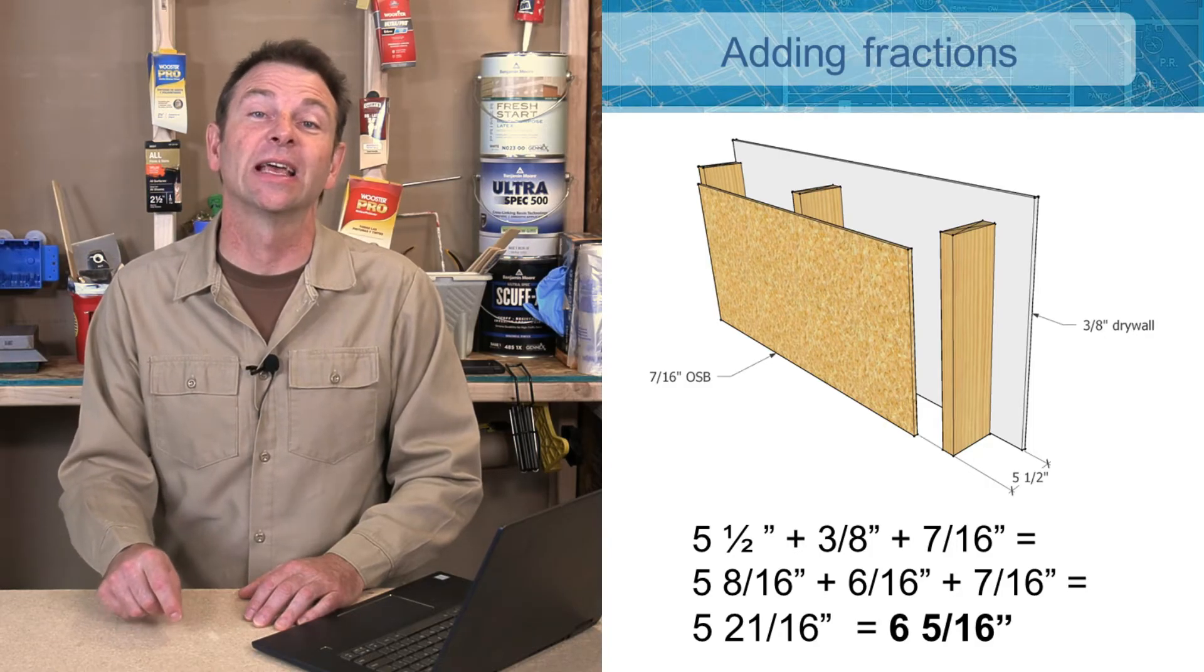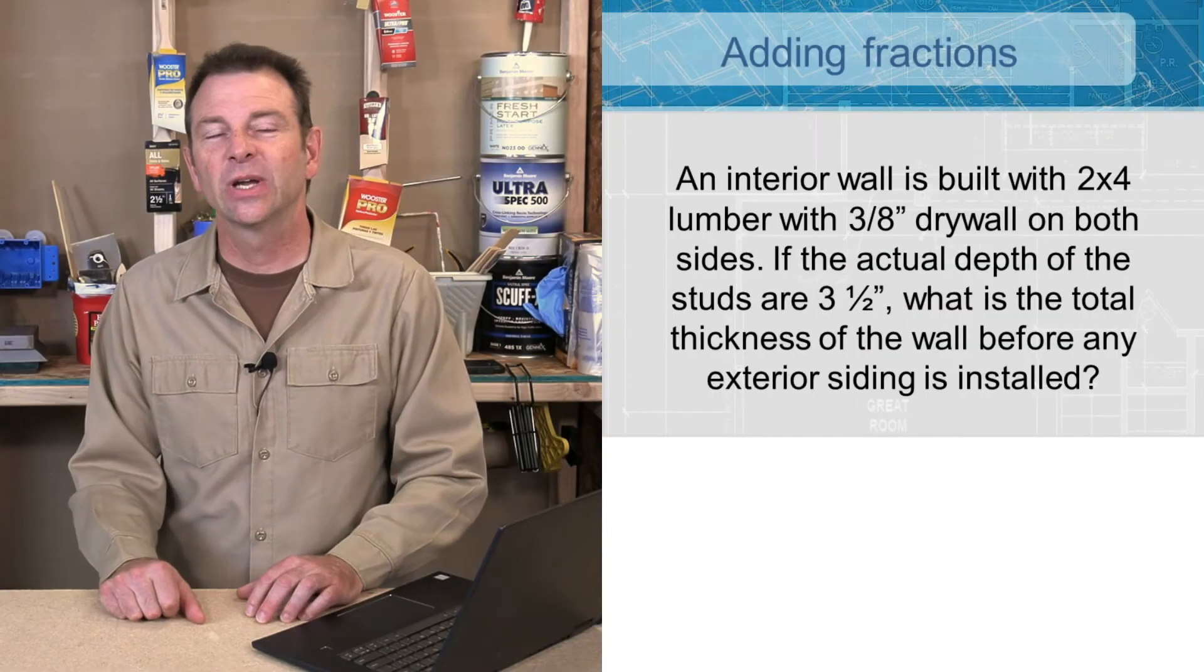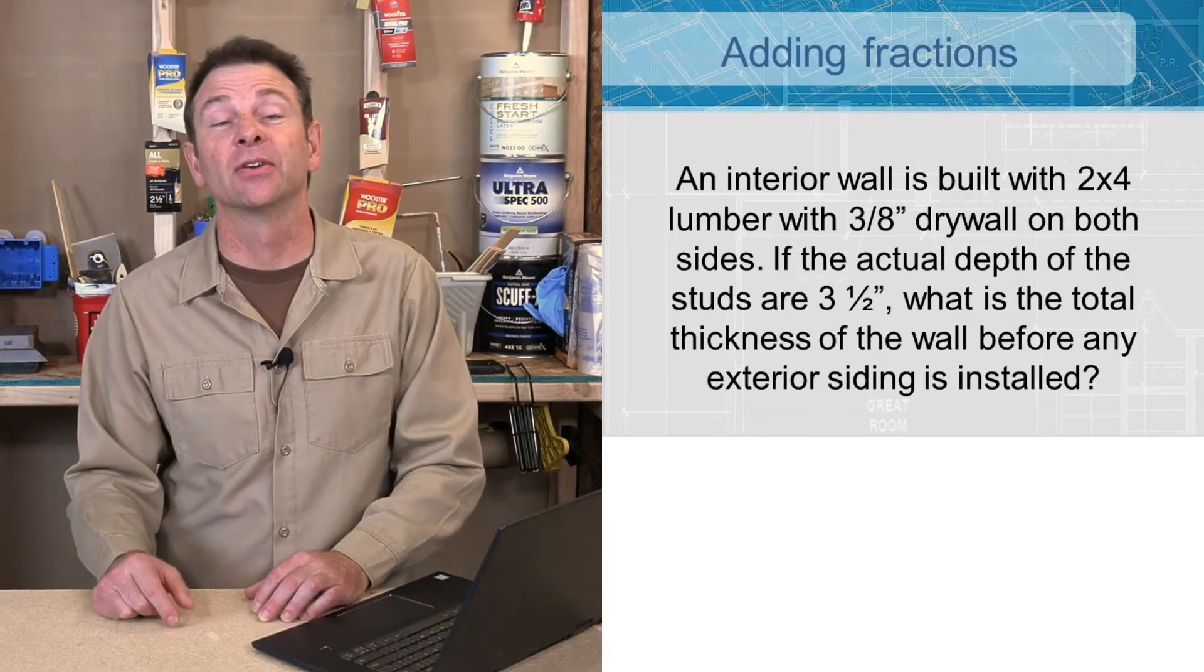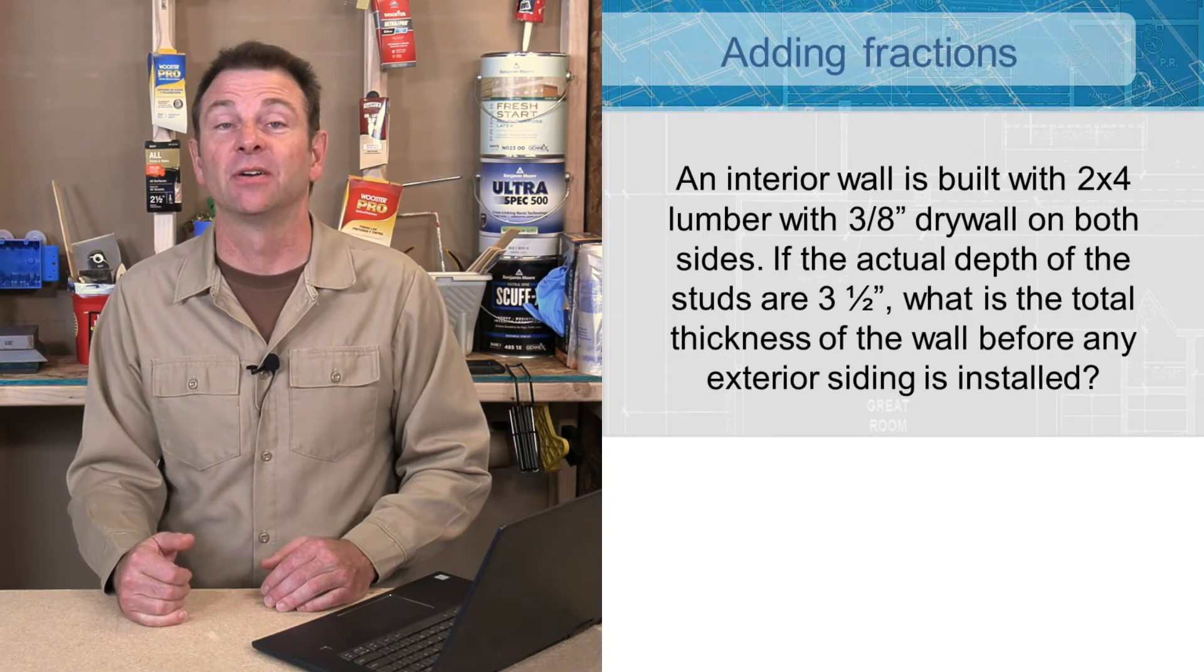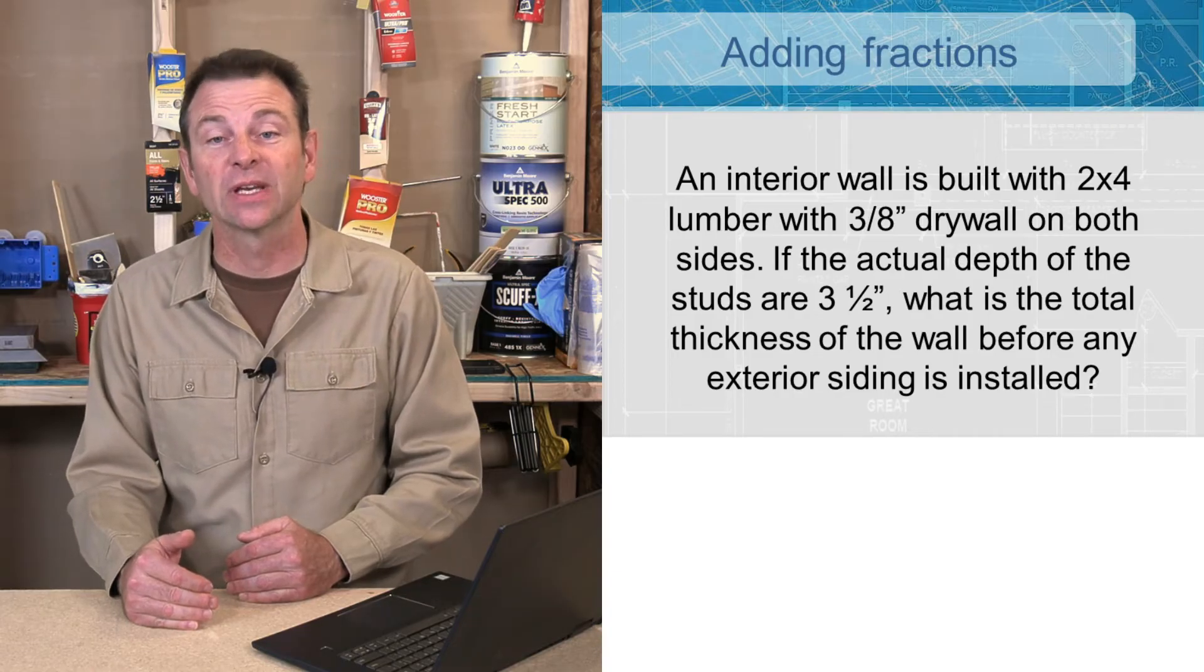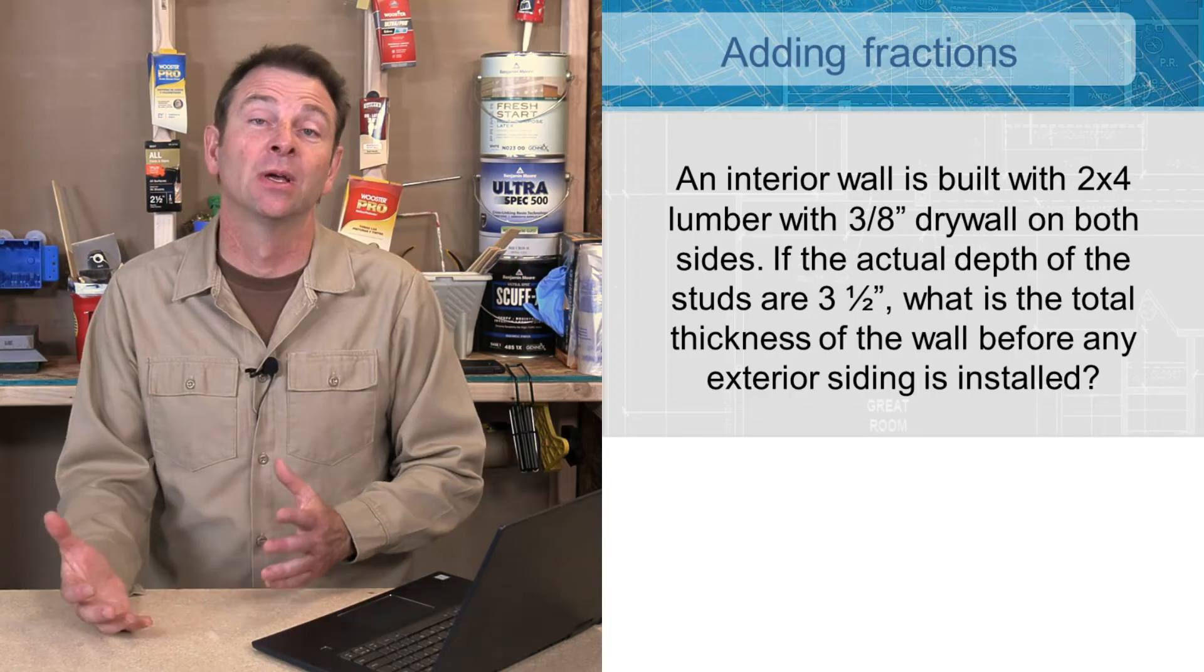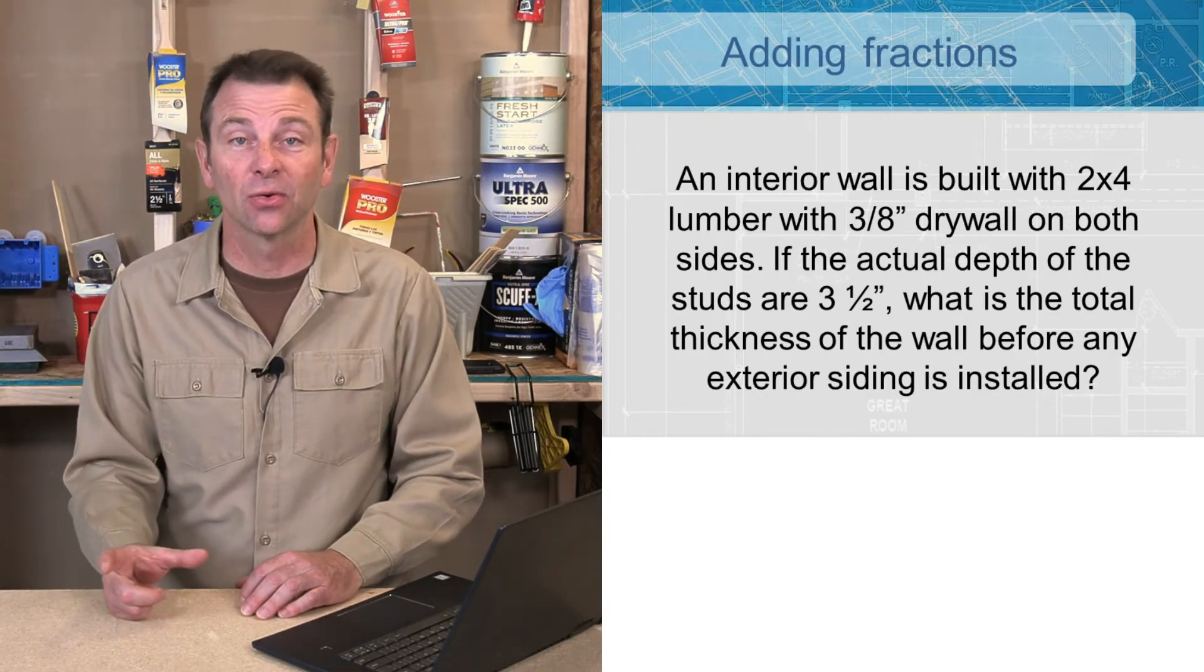Continuing on with adding fractions together, here's another problem to solve. We need to build another wall, this time we're building it with 2x4s, and we need 3/8 drywall on both sides of that wall, a typical installation. And we need to know the total thickness with all those materials added together.